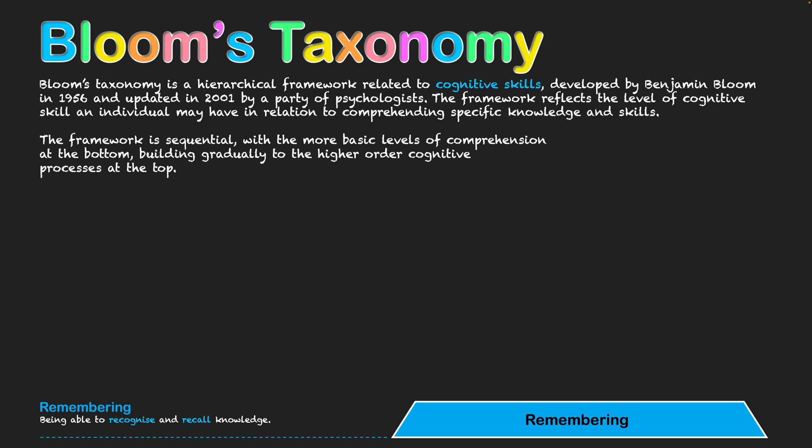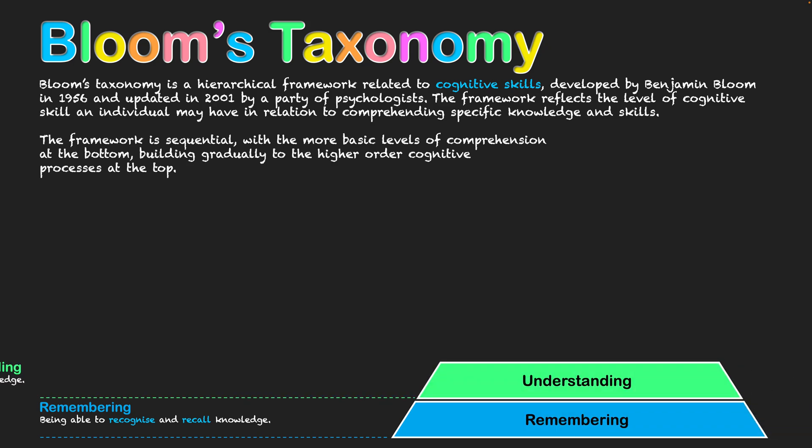The next level is that of understanding, going into a bit more depth. So if I say 1 plus 1 equals 2, you put up your left hand and hold up one finger, put up your right hand and one finger — you see 1 on the left, 1 on the right, you count in your head, 1 and 1, that equals 2. You understand how 1 plus 1 equals 2. You're understanding the rules and facts related to the knowledge, knowing why the knowledge is the way it is. That's understanding.